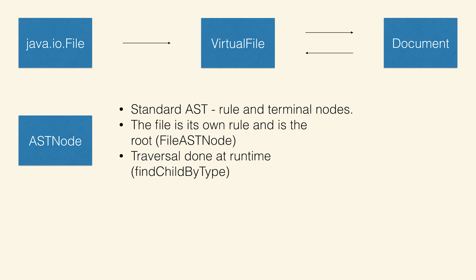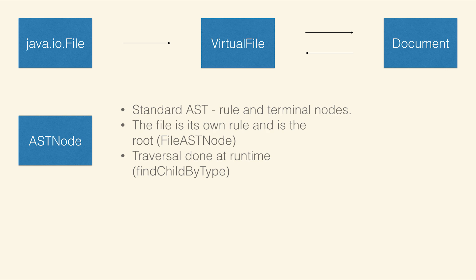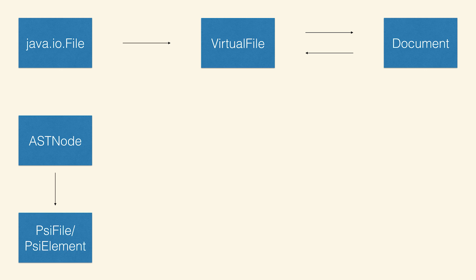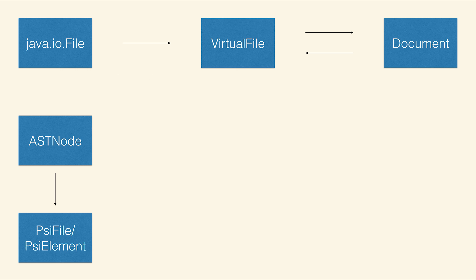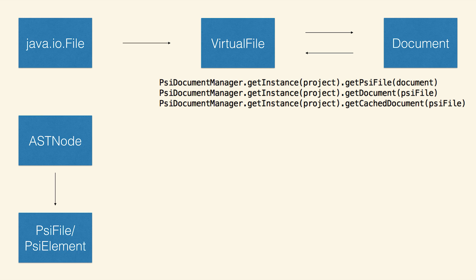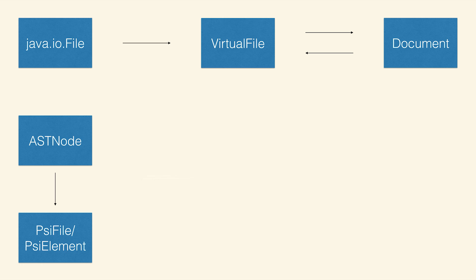All traversal through the syntax tree is done at runtime via find child by type. So if you're in a class and only care about doing something on the methods, you'll call find child by type and iterate over the methods. Since it's done at runtime, you can run into class casting exceptions, so you have to be conscious of that. There's AST node, and then there's one other layer, which is PSI. PSI is the most important part of IntelliJ, and there are several ways to get to it. From a virtual file you use PSI manager; from a document you use PSI document manager get instance. There are also get cached versions, similar to documents. From an AST node you just call get PSI.